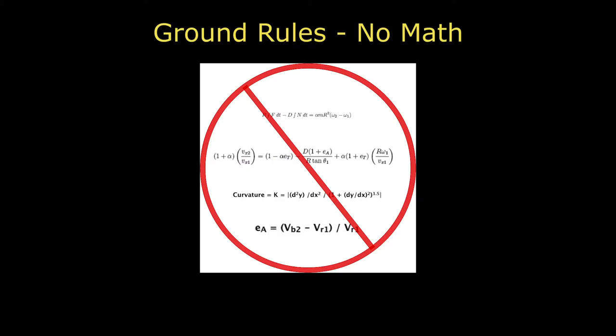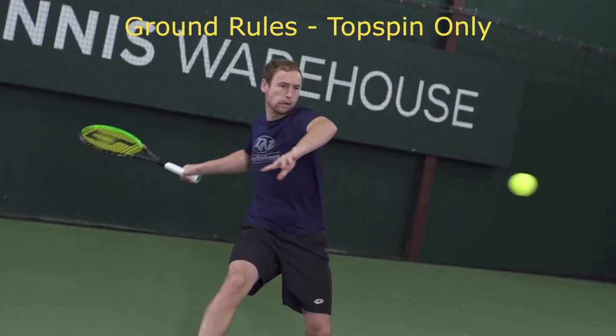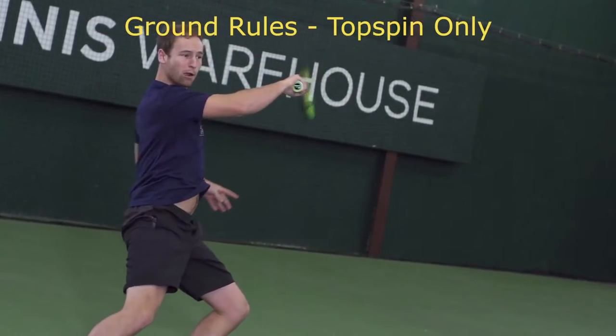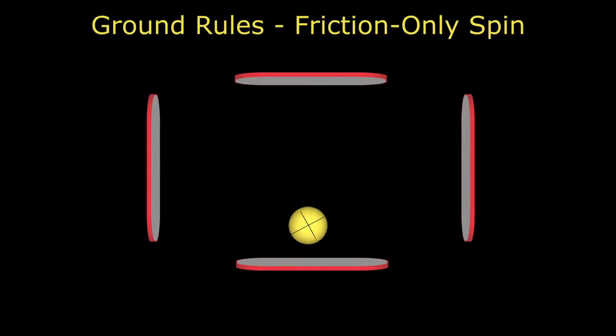But first, before we see friction and contact velocity in action, we need to establish the context of the discussion. First, the ground rules are no math, just concepts. Second, when talking about spin generation, we are only talking about topspin. And third, I want you to imagine that the string bed looks and behaves more like a flat, solid surface, like a board, perhaps. This allows us to see how friction works in its essence, independent of string properties and behavior. It is, after all, this type of friction that gives us 80 to 100% of our spin anyway. We will call this the friction-only phase of the impact. And we will look at the other 20% contributed by categories 2 to 4 in another tutorial.